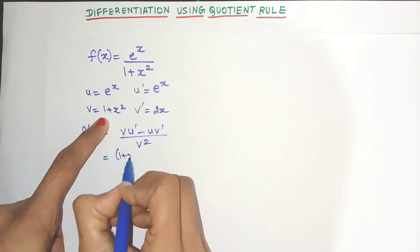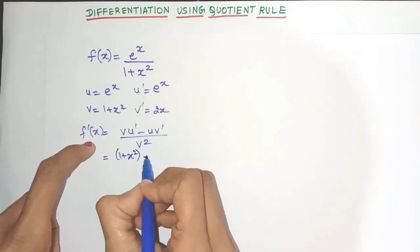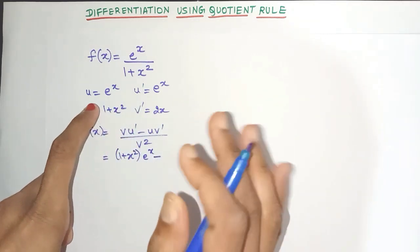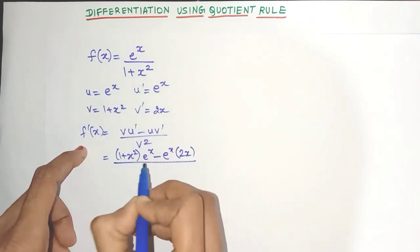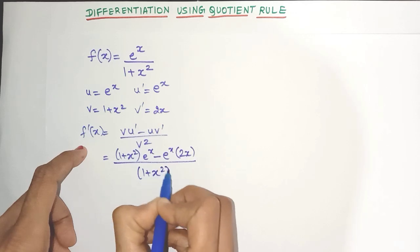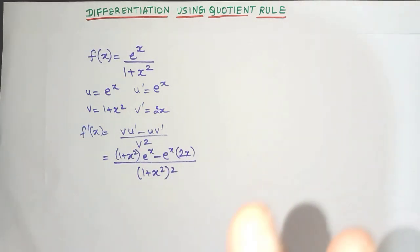So v is nothing but 1 plus x square. Derivative of u is e to the power of x. Very carefully substitute the values. And the derivative of v is 2x divided by 1 plus x square the whole square. That's it. We have got the derivative but simplification is remaining.